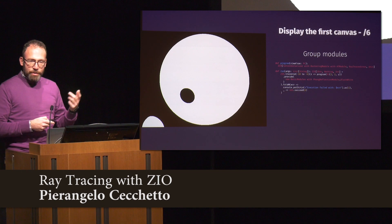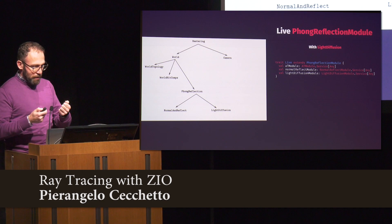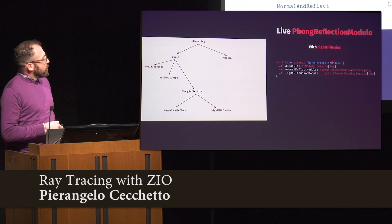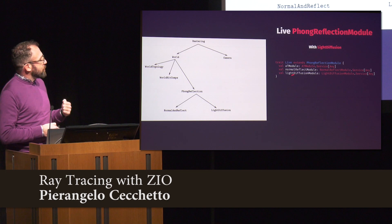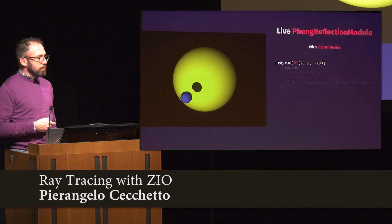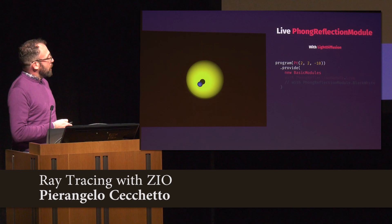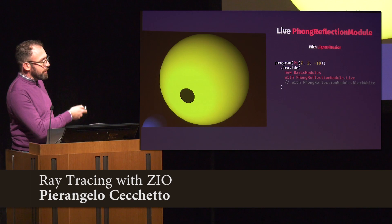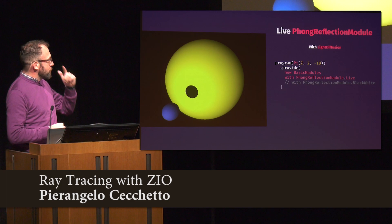This is enough to produce an image where you can see the shadow of one object on top of the other. Now to make things more realistic, we make our reflection module more complicated, depending on something that caters for reflection and another for light diffusion. With this our shapes get more realistic. All it took was swapping one dependency for another in the main — you make these kinds of changes as late as possible.